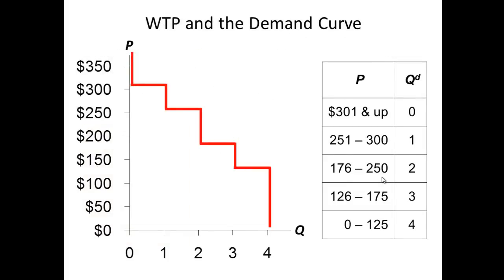When we graphically represent consumers' willingness to pay, it will look somewhat like this. When the price is $0 to $125, all four individuals — John, Flea, Chad, and Anthony — are willing to pay for an iPod. If the price is between $126 and $175, there are three individuals who are willing to pay: Anthony, Chad, and Flea.